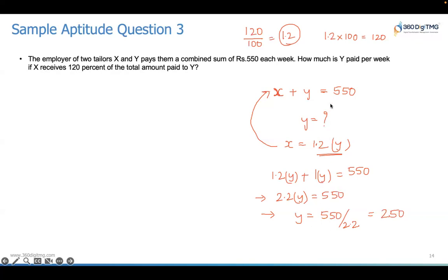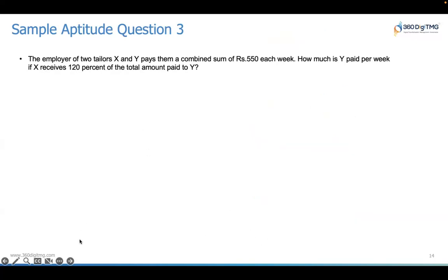So how much will Taylor Y get paid per week? 250 rupees. And how much will Taylor X get paid? X is equal to 550 minus Y, which is 250. And then you get 300. This is how you're expected to solve these kinds of questions. Let's move on to the next question.